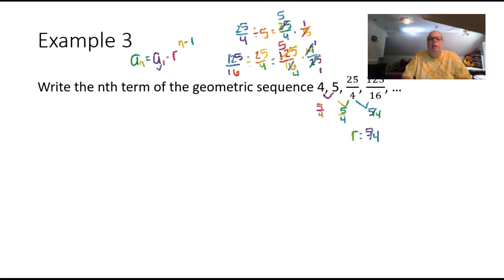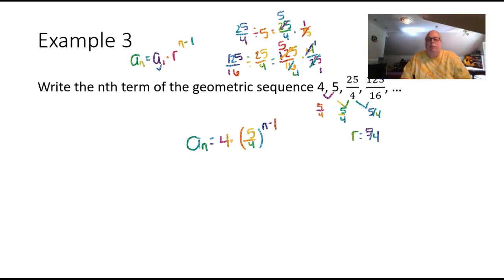Now we plug everything into the formula. The nth term, a_n, equals the first term, which is 4, times r, which is 5/4, raised to the power n minus 1.